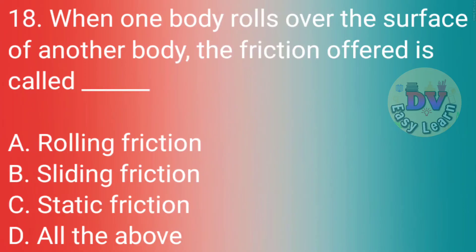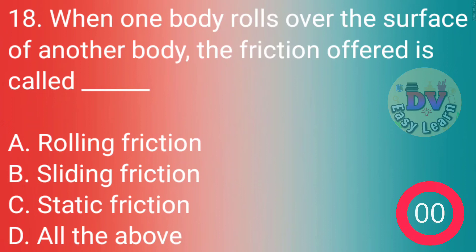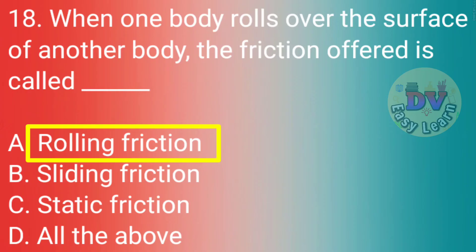Q18. When a body rolls over the surface of another body, the friction offered is called? Correct answer: Rolling friction.